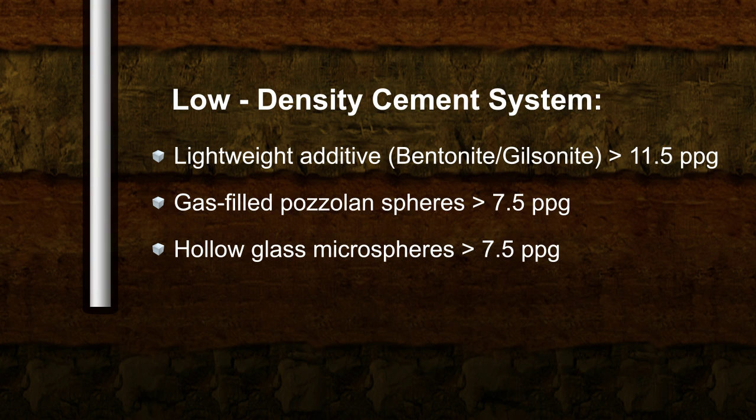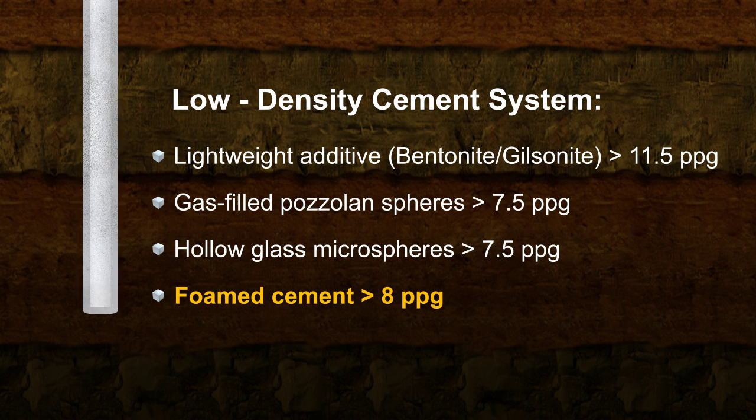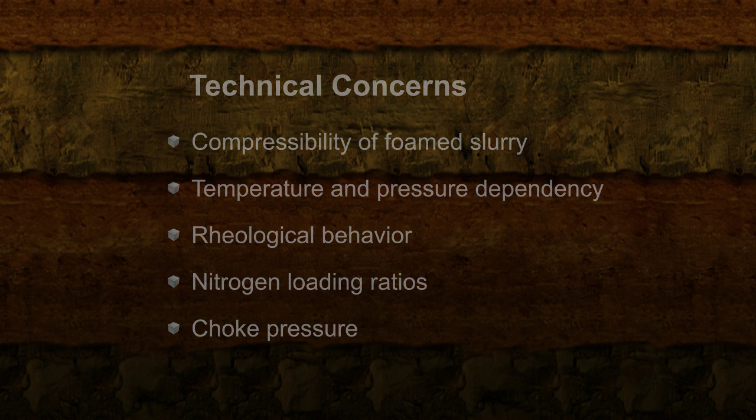Another efficient method, while maintaining good strength properties in the cured cement, is to mix slurries with foaming agents and nitrogen. Designing a foamed cementing job requires cumbersome calculations. Some of the technical concerns are listed here. Foamed cementing techniques rely on the prediction of the density of foamed slurries.